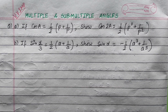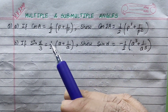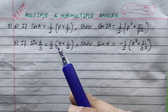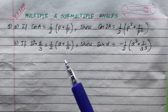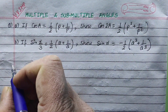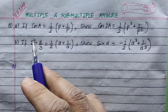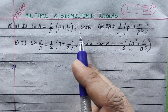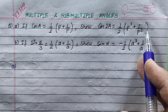Hi everyone. Today we have a very important question from multiple angles. This is an example that I frequently thought about. If cos equals to half p plus 1 by p, then cos 2θ equals to half p square plus 1 by p square.